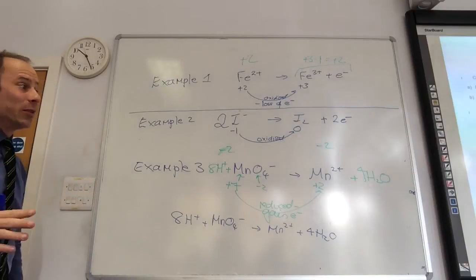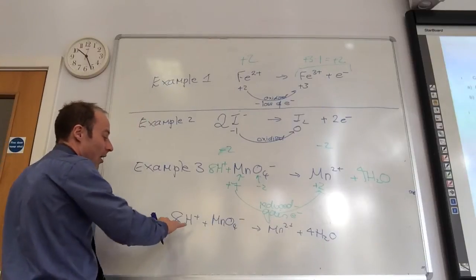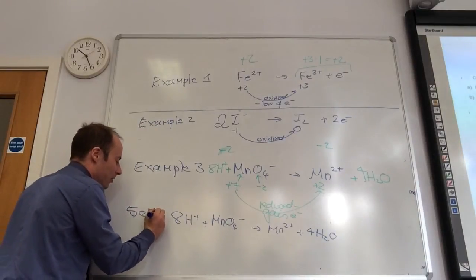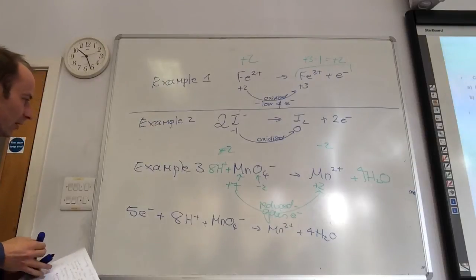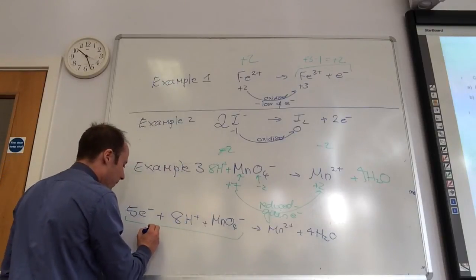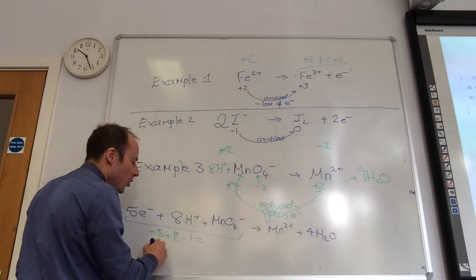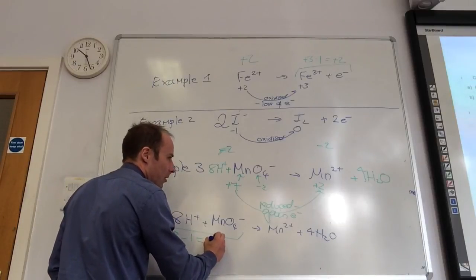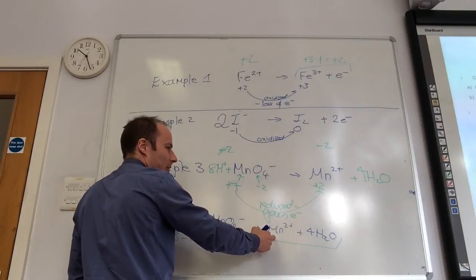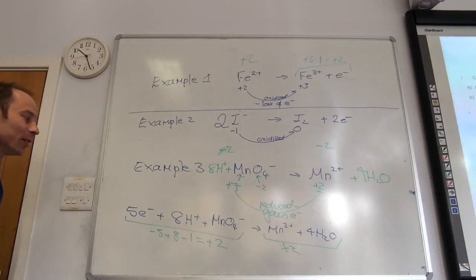And that's just sorted out my atoms. The final step now, I'm going to put in my electrons. How many electrons do I need to add this side? Five electrons. Final check. Let's hope this works. Over this side, I have got five minus, five plus, eight minus one. That gives me an overall charge on my left-hand side of +2. Mathematical geniuses. Over this side, I have plus two. Just for the manganese. Water is neutral. So, it's all balanced.